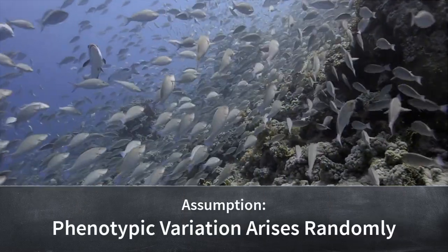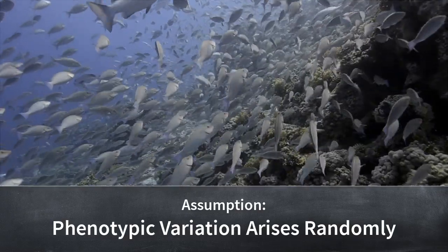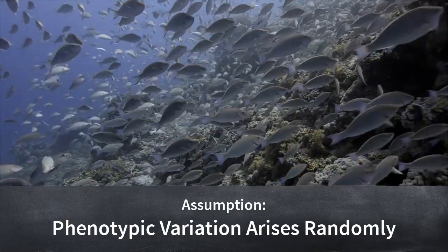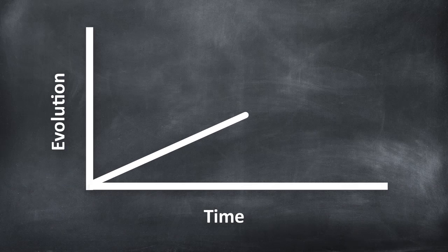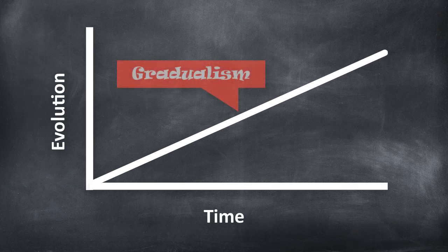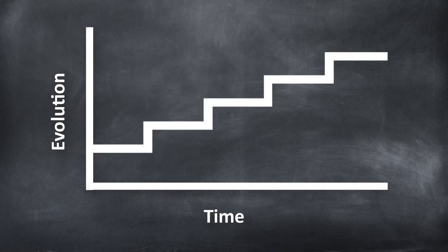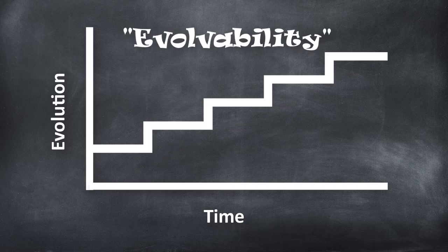Biologists have generally assumed that phenotypic variation arises randomly as a result of genetic mutation. If this were true, then the evolutionary story would be one of gradualism. But the history of life suggests bursts of innovation followed by long periods of relative stasis. Life appears to have evolved evolvability.